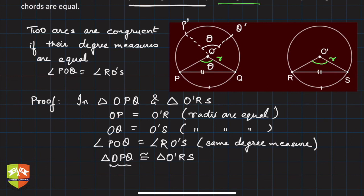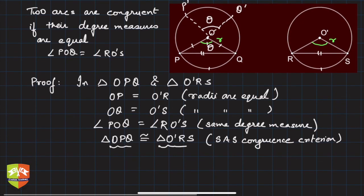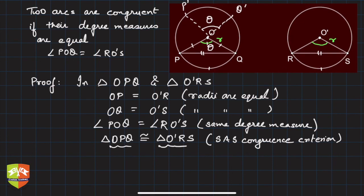What is the criteria here? If you see, this is side, then angle, then side. Hence by SAS congruence criterion—as we learned in previous sessions—this is the SAS congruence criterion.